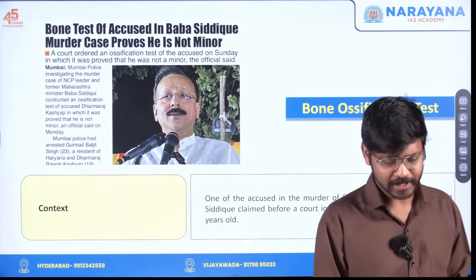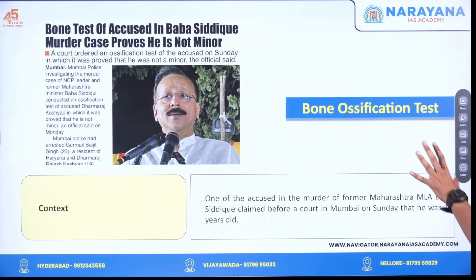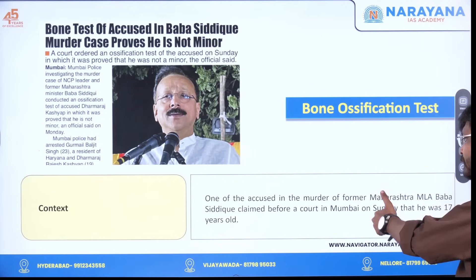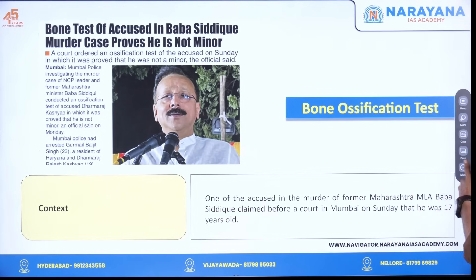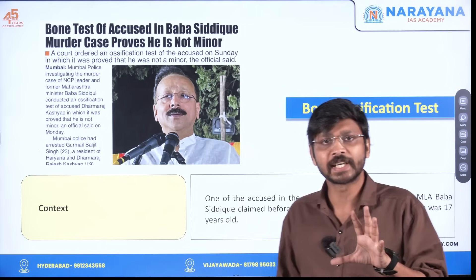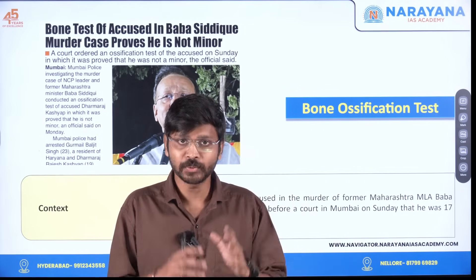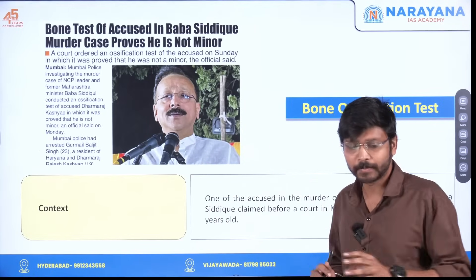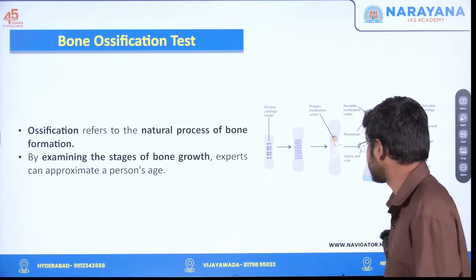Let us quickly go through the context of this particular topic. One of the accused in the murder of former Maharashtra leader Baba Siddiqui claimed before a court in Mumbai that he was just 17 years old. The court ordered a bone ossification test to determine his real age.